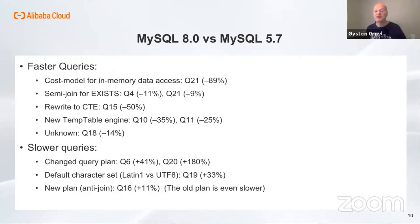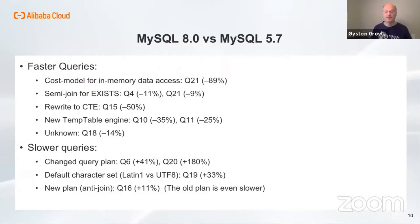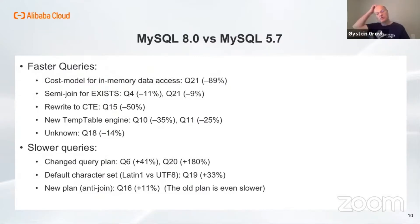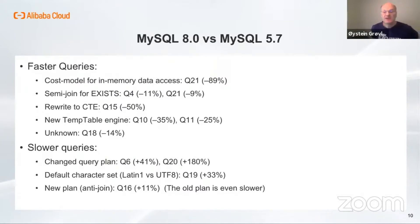For query 15, I've rewritten the query to use a common table expression instead of a view. This is an approved variant by TPC-H, and the execution time is cut in half since the materialization of the CTE can be reused — we no longer do two materializations of the same query. Queries 10 and 11 benefit from the new temp table engine. This engine is not necessarily faster, but all queries share a one gigabyte memory buffer, while the old memory engine by default only used 16 megabytes per temporary table before moving data to disk. For query 18, we haven't really found out why it's better — maybe it benefited from the new iterator-based execution framework in MySQL 8.